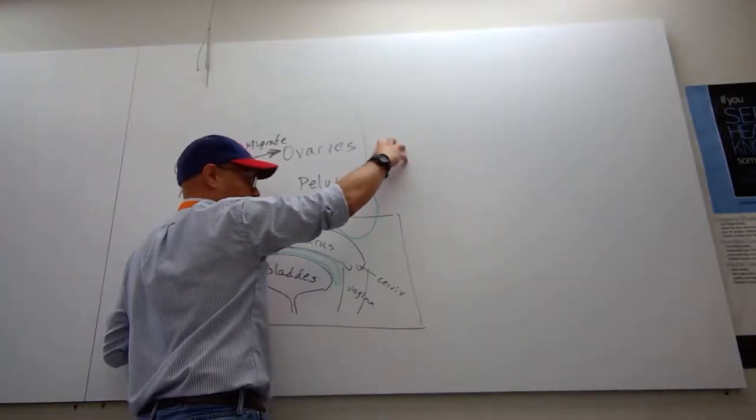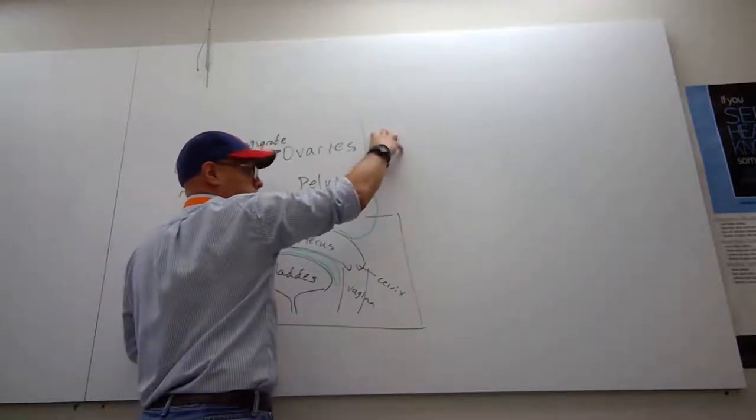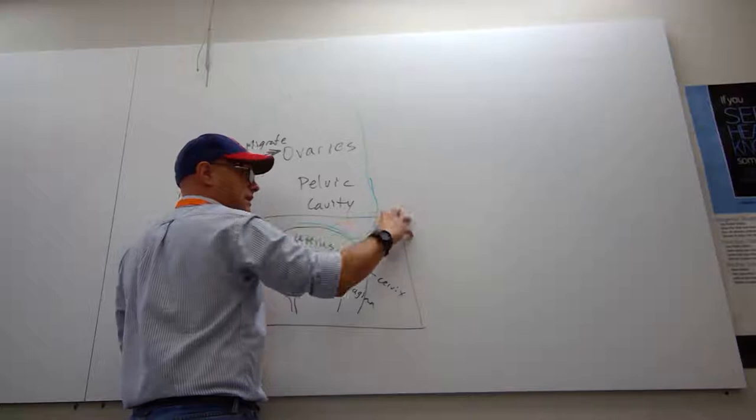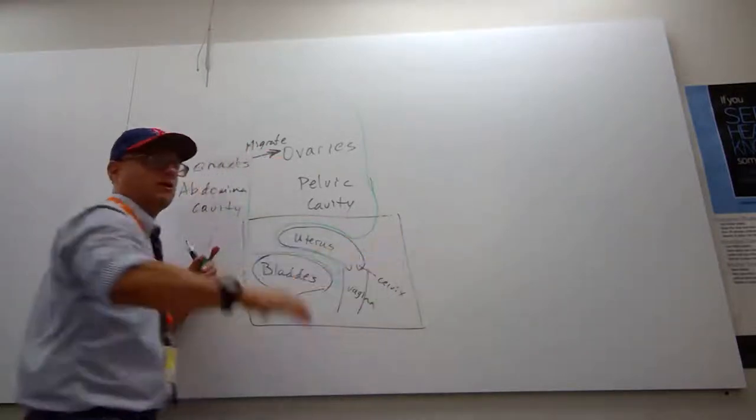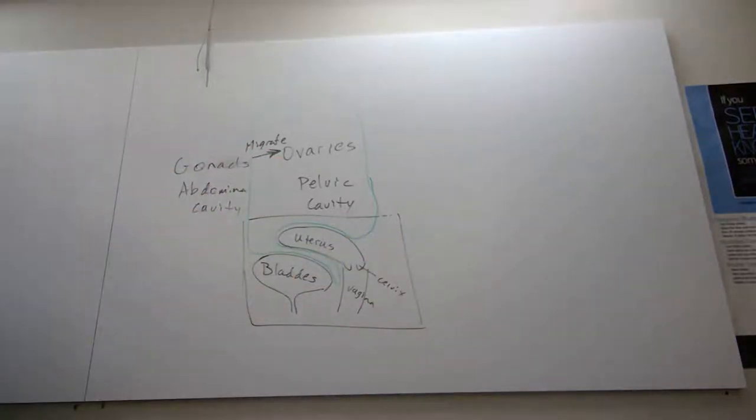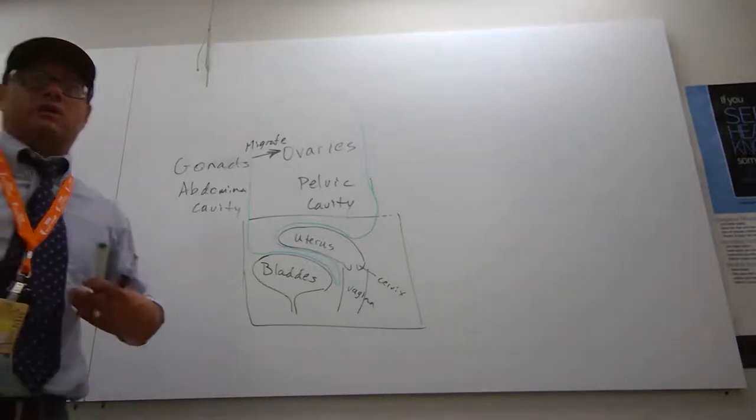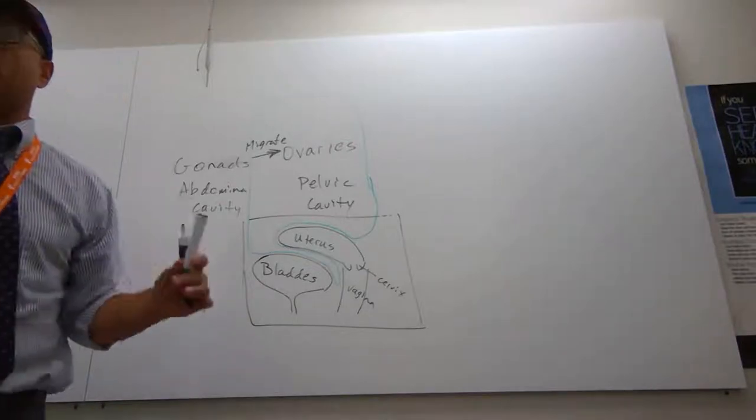And then behind that, this is vagina, this is cervix, this is uterus. And what we're missing is kidneys over here behind the wall. Kidney's over here behind the wall. This is anterior posterior. Kidney's over here behind the wall. And rectum, ascending colon and descending colon are also in the wall.